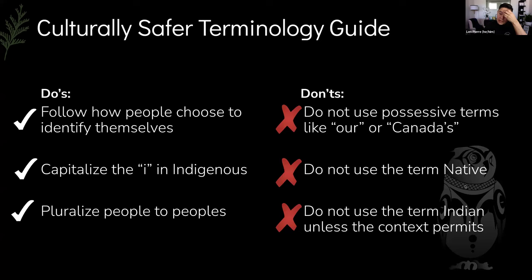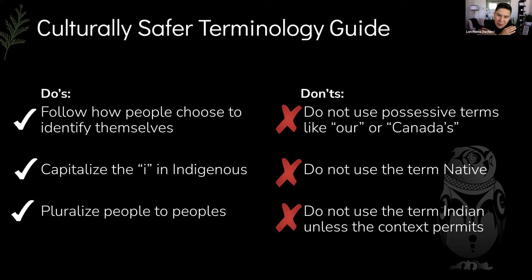How do you avoid the possessive pitfall? It's easy — you just reverse the word order. Instead of saying 'our Indigenous patients' or 'our Indigenous students,' say 'Indigenous students who we work with' or 'Indigenous patients that we take care of.' And instead of 'Canada's Indigenous people,' say 'Indigenous peoples in Canada.' You reverse the word order and skip that pitfall.